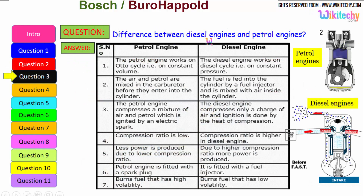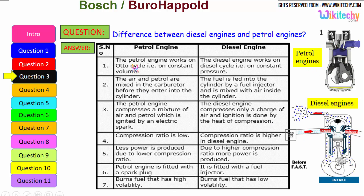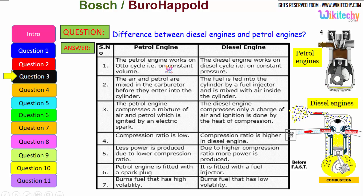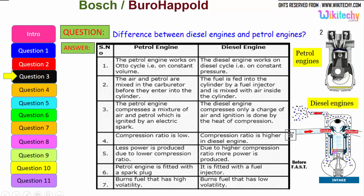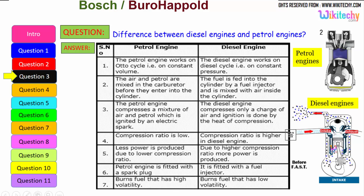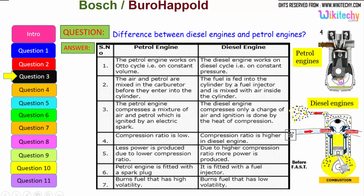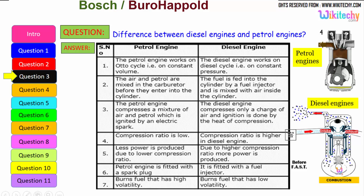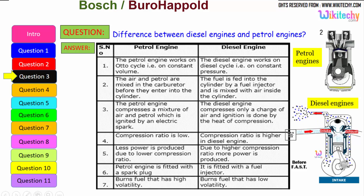Let us see the difference between the diesel engine and the petrol engine. The petrol engine works on the Otto cycle, therefore on constant volume, whereas the diesel engine works on the diesel cycle, on constant pressure. The air and petrol are mixed in the carburetor before they enter the cylinder, while in a diesel engine the fuel is fed into the cylinder by a fuel injector and is mixed with the air inside the cylinder.